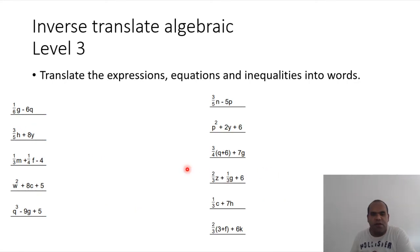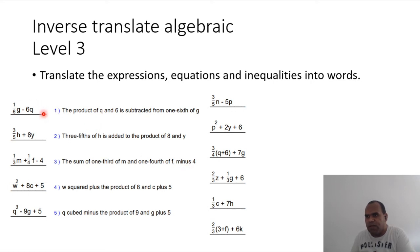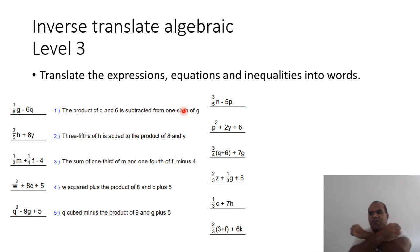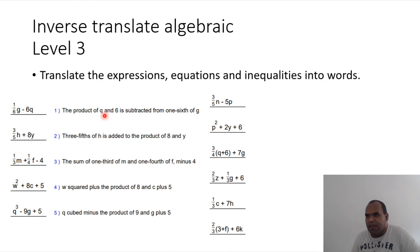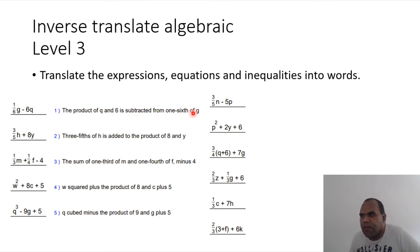Level 3 — the last one. This is hard, but let's try. The first one: 'the product of q and 6 is subtracted from one-sixth of g.' Turn-around phrase here — 'subtracted from' means I need to turn around everything. So: product of six and q subtracted from one-sixth of g. 'Taking away' again — from one-sixth of g.